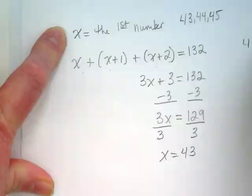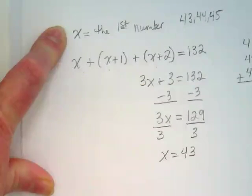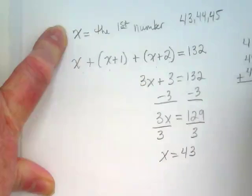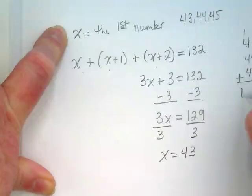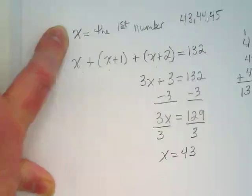43, 44, 45. When I add them, do I get 132? 7 plus 5 is 12. 1, 2, 3, 4, 4, or 3, 4 is 12, plus 1 is 13, so we get 132. It checks.